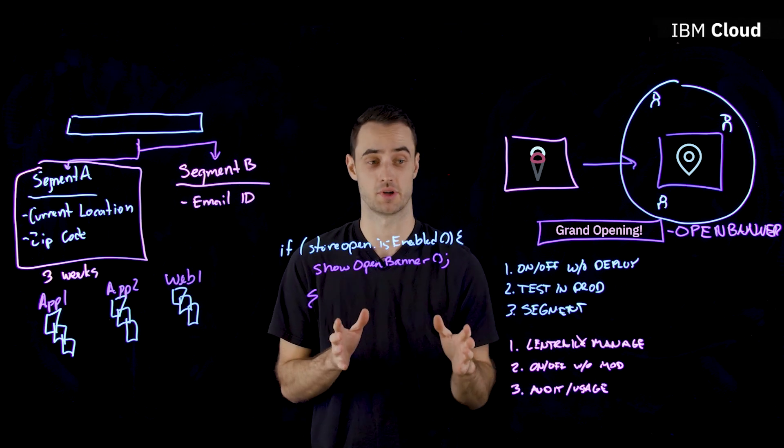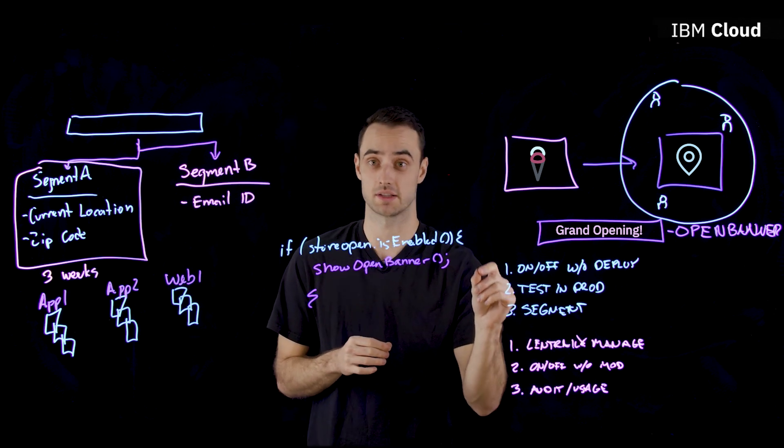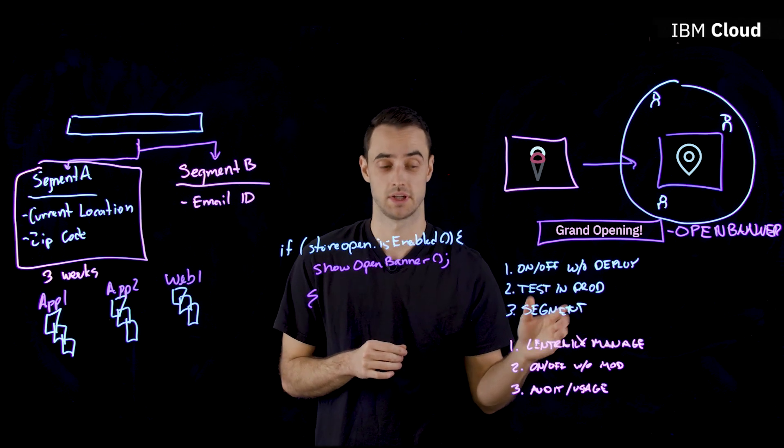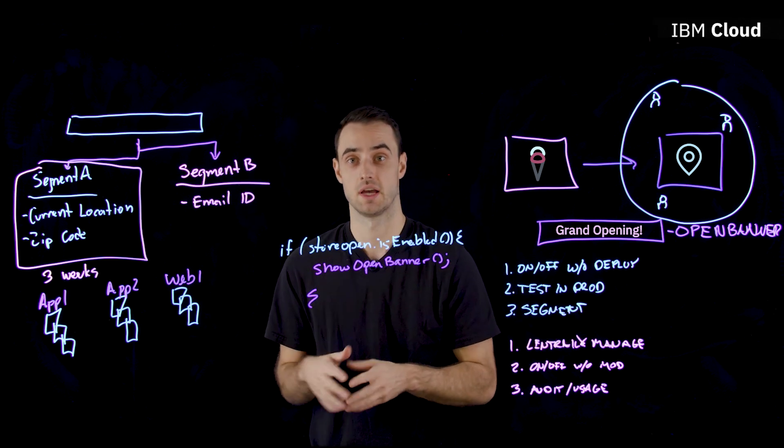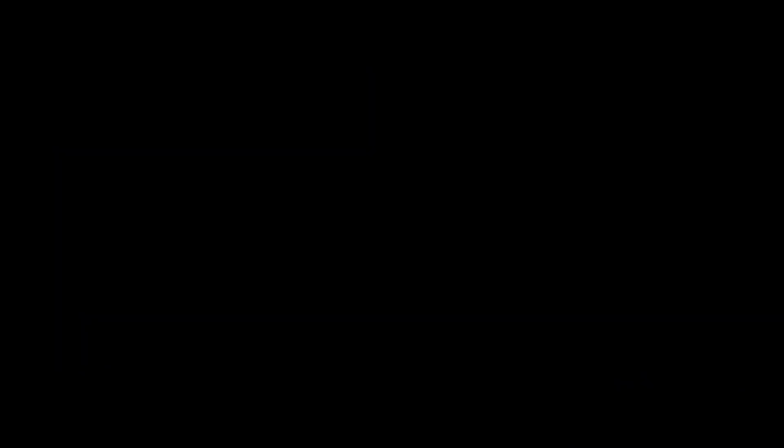So now today, we've learned about turning feature flags on and off without deployment, testing directly in production, and then segmenting those features based on the user attributes. Thank you for watching. If you have questions, please drop us a line below. If you want to see more videos like this in the future, please like and subscribe. And don't forget, you can grow your skills and earn badges with IBM Cloud Labs, which are free browser-based interactive Kubernetes labs.